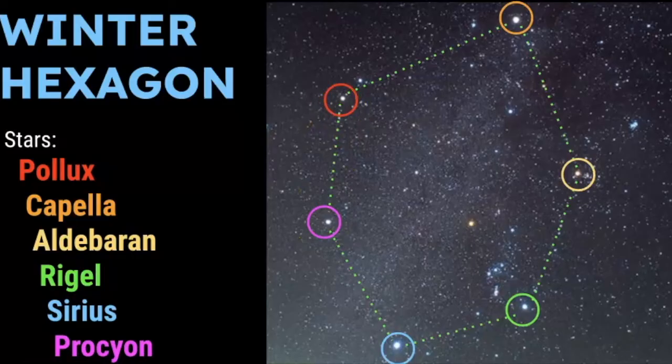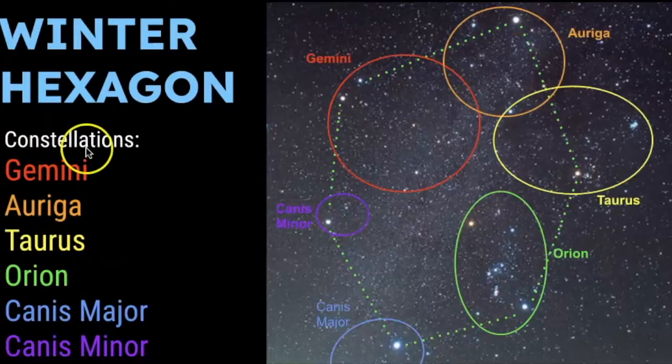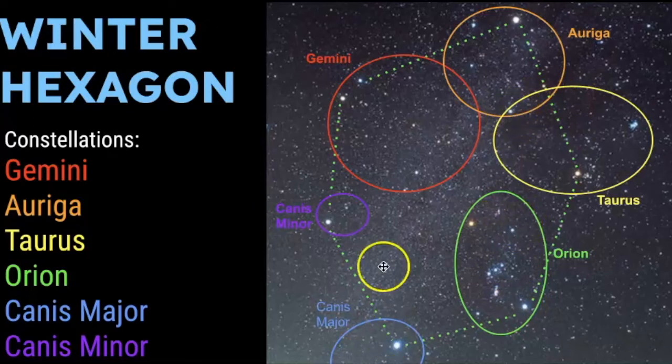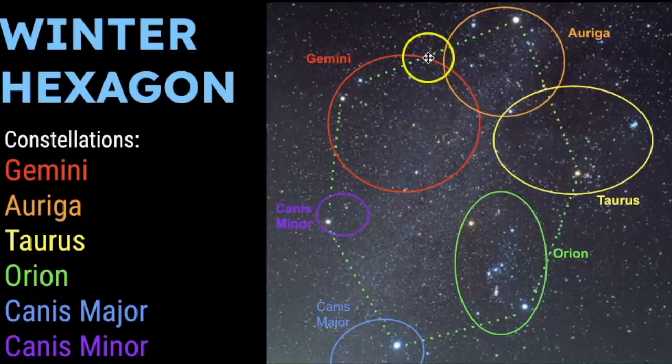And if we were to point out which constellations are connected with each of these stars, this is what that would look like. So again, our focus for this video is Capella. It's a part of the constellation Auriga. And again, it's connected to Taurus by one star right there. Then we have Orion, Canis Major, Canis Minor, and finally Gemini.